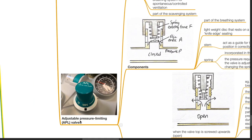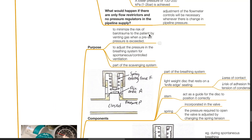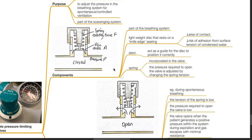Adjustable pressure limiting valve, or APL valve. Purpose: to minimize the risk of barotrauma to the patient by venting gas when a preset pressure is exceeded, to adjust the pressure in the breathing system for spontaneous or controlled ventilation, and it forms a part of the scavenging system. Components: it is part of the breathing system. A lightweight disc that rests on a knife-edge seating is present. There is a low area of contact, which reduces the risk of adhesion from surface tension of condensed water.